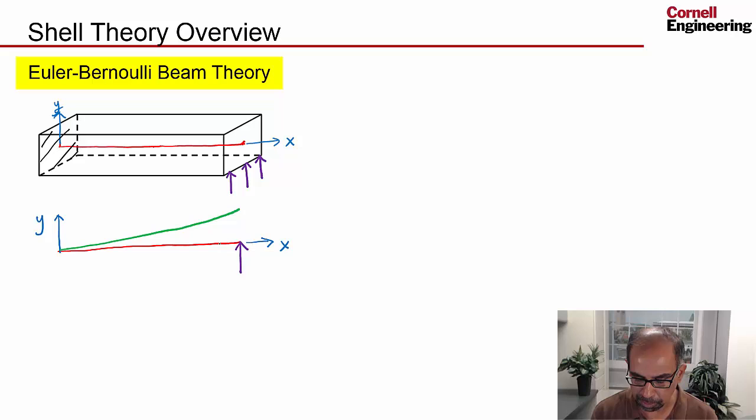If I have a point on the midline, it's going to move in the y direction, the transverse direction. I also assume that any cross-section is going to rotate together as a whole. If I show the cross-section, it's just going to rotate as a whole, and that should be 90 degrees. That's an assumption built into Euler-Bernoulli beam theory.